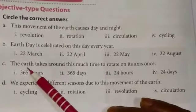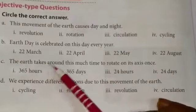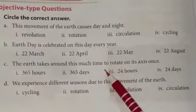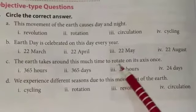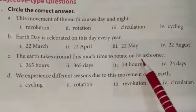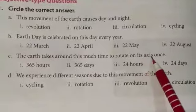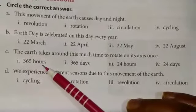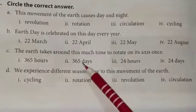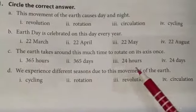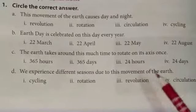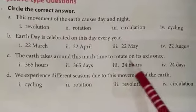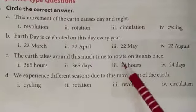The earth takes around this much time to rotate on its axis. Options: 365 hours, 365 days, 24 hours, 24 days. Circle 24 hours.